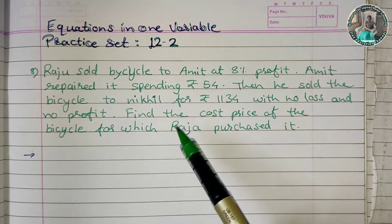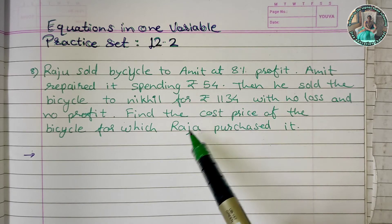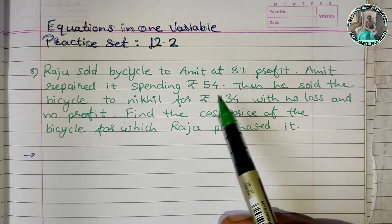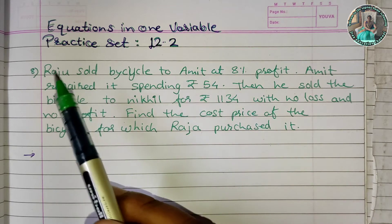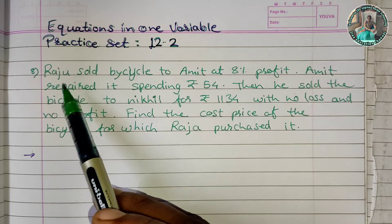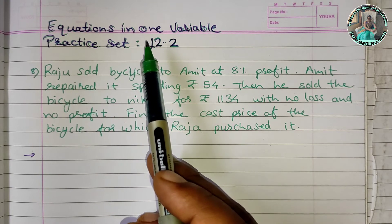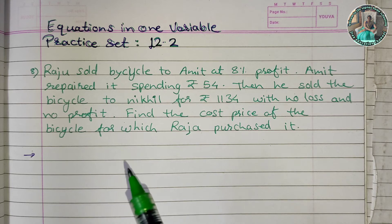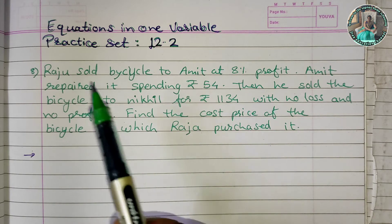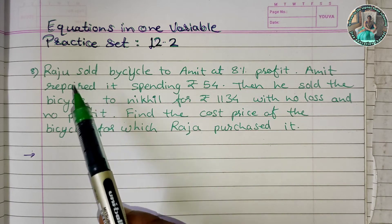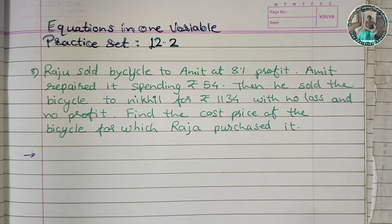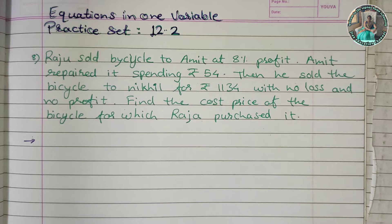We need to find Raju's purchase cost. We have the equation in one variable. We assume that Raju purchased the bicycle at cost x.